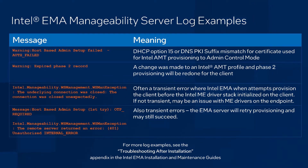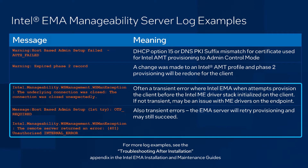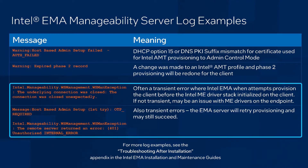Next on the list are a couple of potentially transient errors. For example, the message about a WSMAN exception where the underlying connection was closed unexpectedly. This can occur when the Intel Emma agent is trying to start provisioning AMT or ISM before the Intel Management Engine and AMT driver stack have fully initialized in the operating system. Often this resolves itself once the driver stack is loaded and the Intel Emma agent is able to talk to it to configure AMT. Where it persists indefinitely, there may be an issue with the Intel ME drivers on that endpoint.